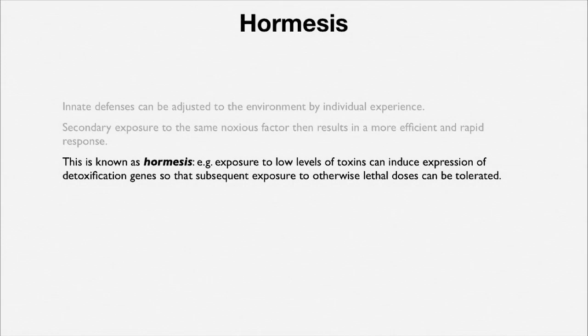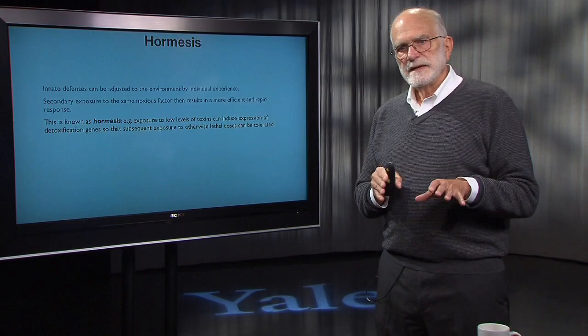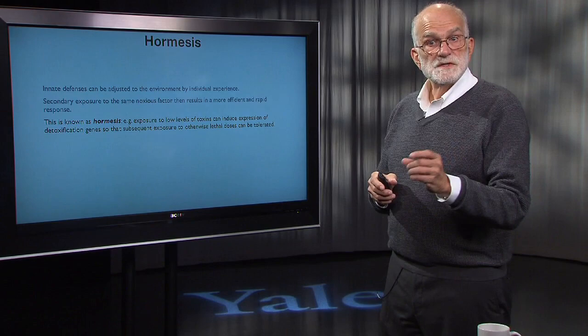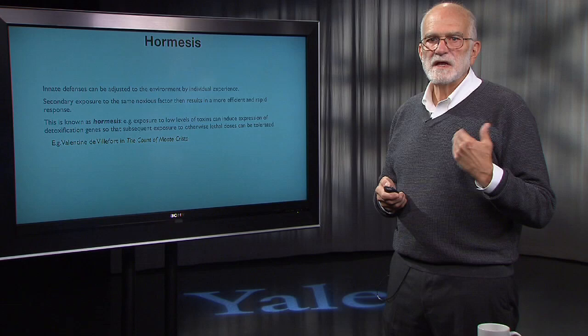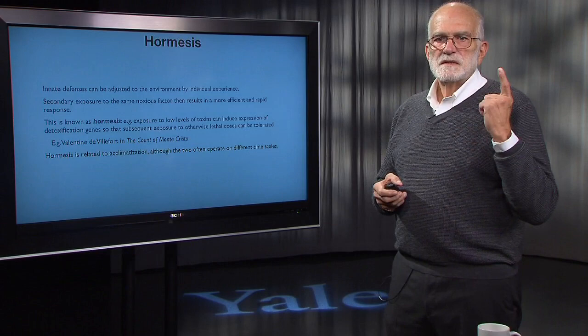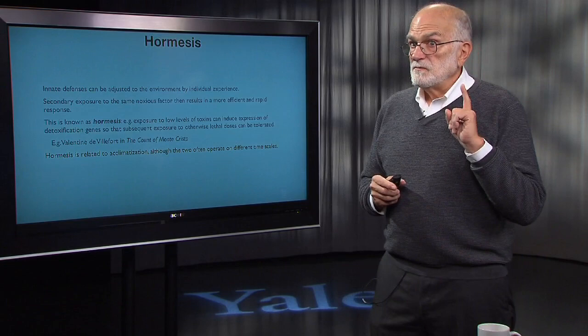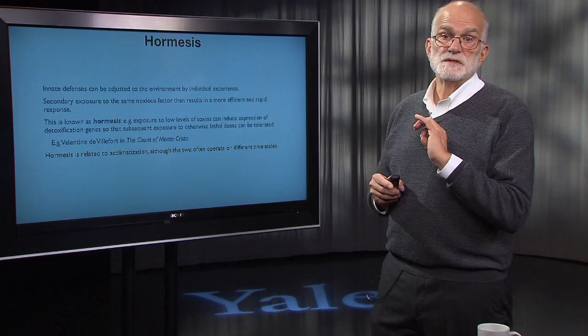On a more mild level, if you are planning to have an alcoholic binge, it's probably wise to have small amounts of alcohol for several days continually, and that will upregulate your ethanol detoxification genes in your liver. A more extreme case is Valentin de Villefort in the Count of Monte Cristo, where Edmond Dantes anticipated that a bad person was going to try to poison her, so he gave her small quantities of the same poison so that when she actually was poisoned, she went into a coma but then recovered from it.